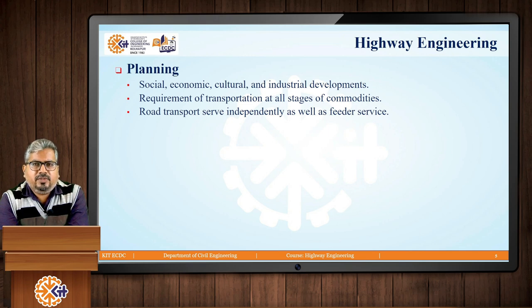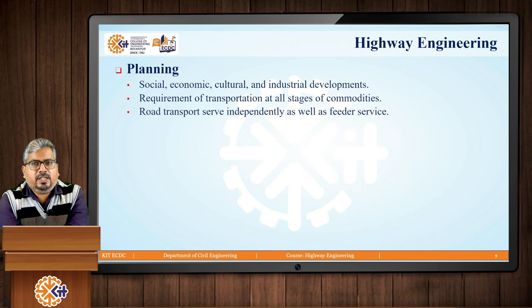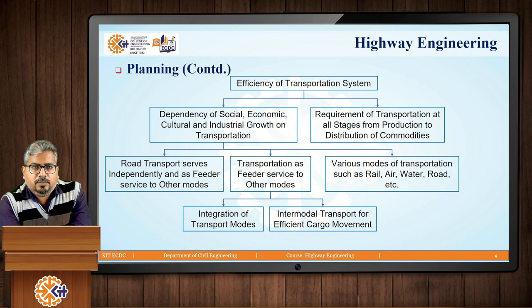Similarly, bus services are available for nearby cities such as Mysore and Mangalore. When going to the airport to board a flight, the same buses act as feeder services. For example, a traveller from Electronic City can take bus KIA9 to the airport. Here we can see highway planning in the form of a flow chart.